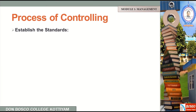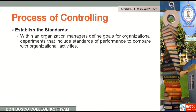The first step is establishing the standards. Within an organization, the manager defines goals for organization departments. That includes standards of performance to compare with organizational activities. The manager sets the standard of performance, and we compare the standard of activities to identify deviations.